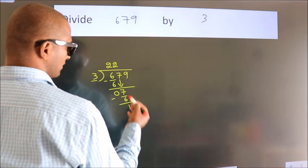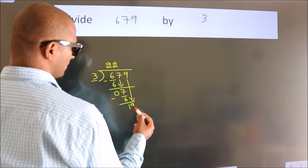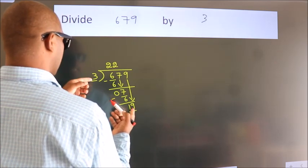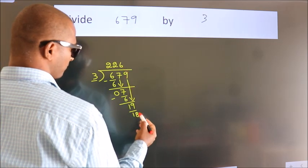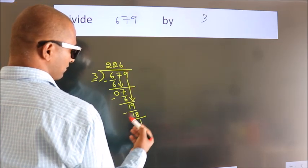After this, bring down the beside number. So 9 down. So 19. A number close to 19. In 3 table is 3 6 18. Now we subtract. We get 1.